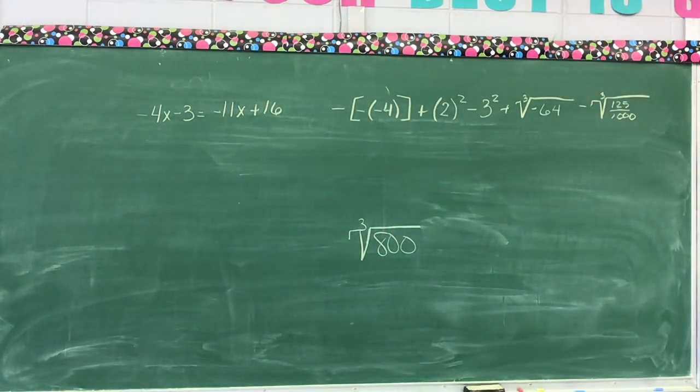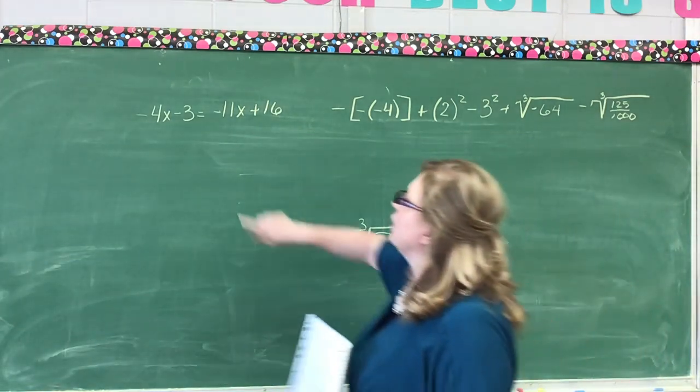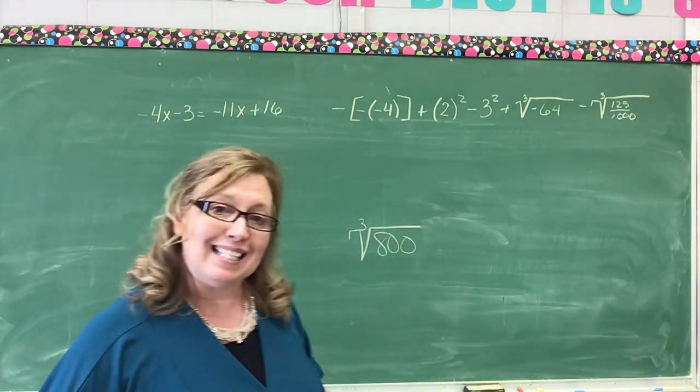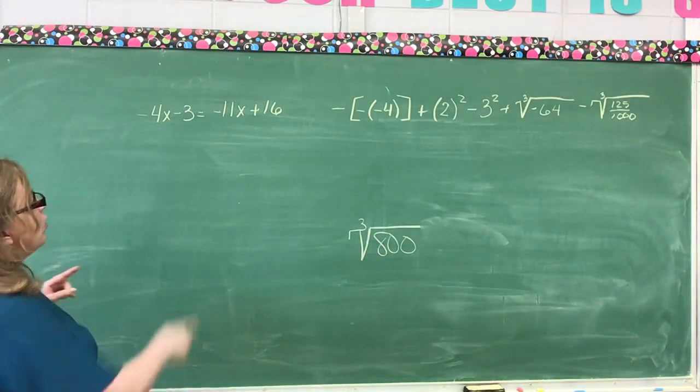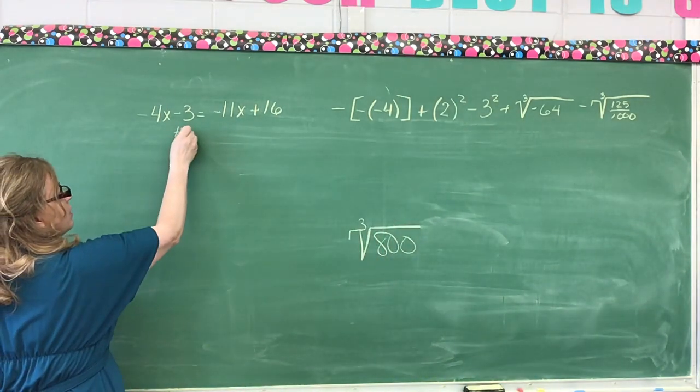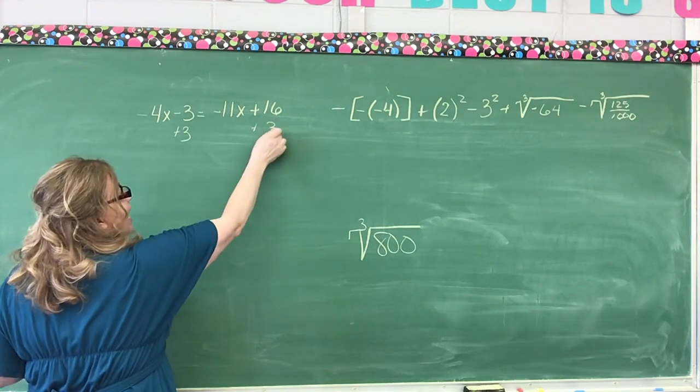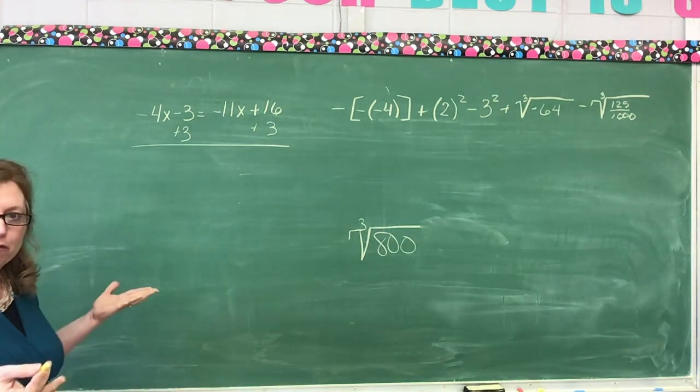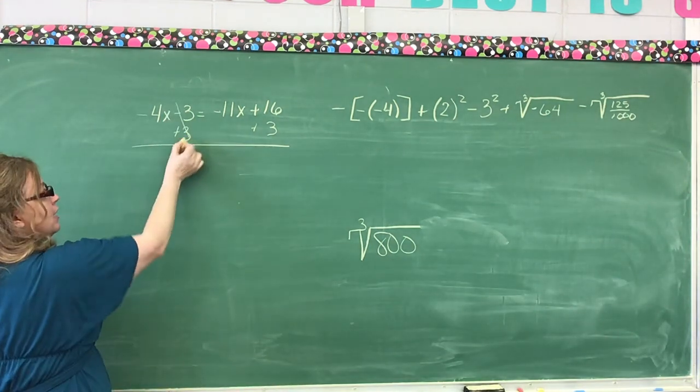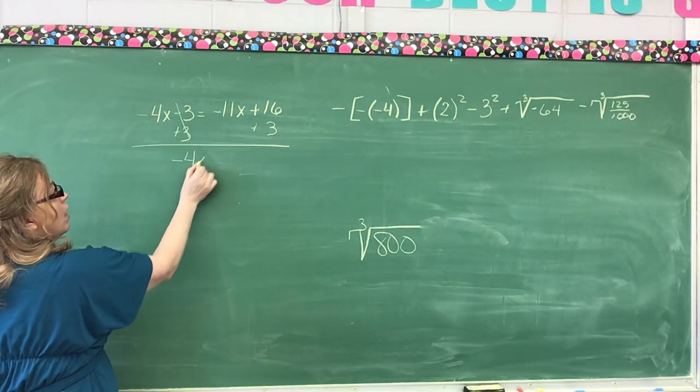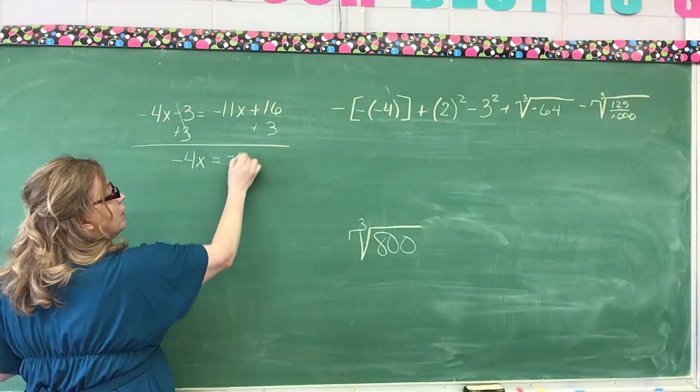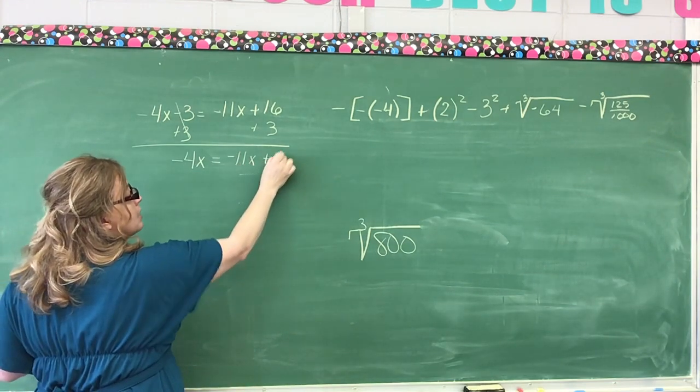Let's look at the first one. We have -4x - 3 = -11x + 16. So the first thing we have to do is get the constants on one side. Let's add 3 to this side. Of course that means I have to add 3 to that side. Whatever I do on the left, I have to do on the right. This is going to cancel, leaving us -4x = -11x + 19.